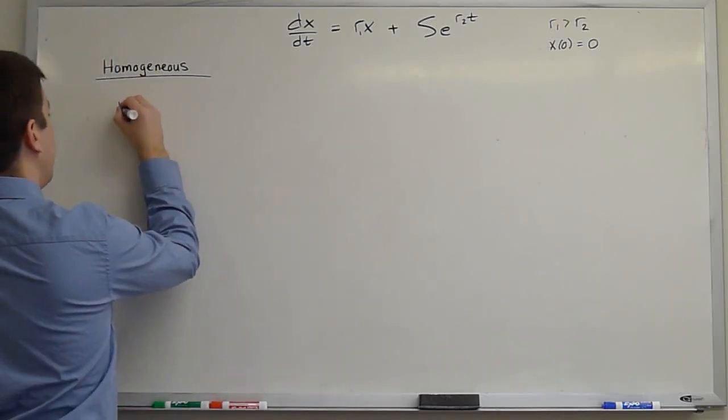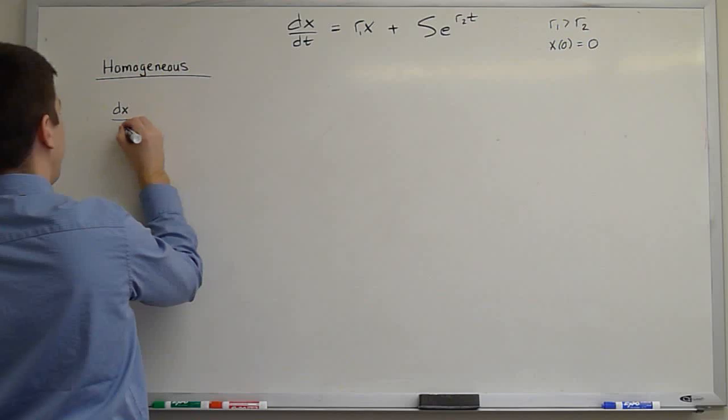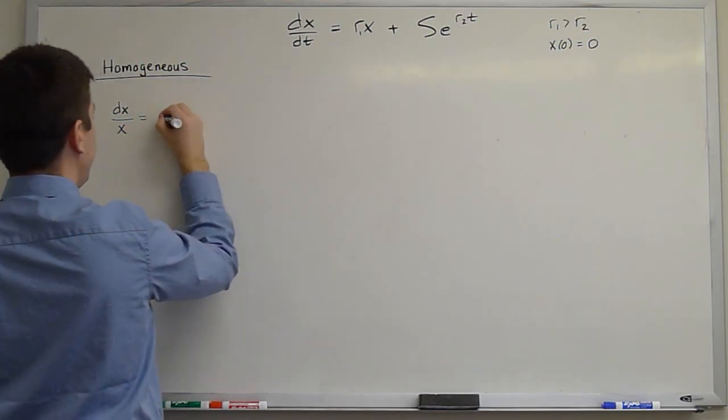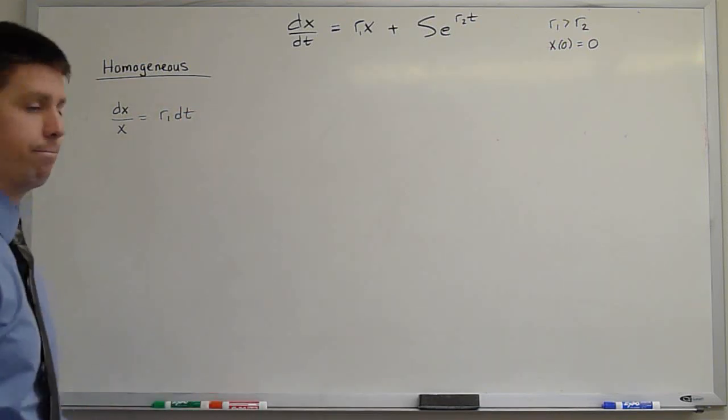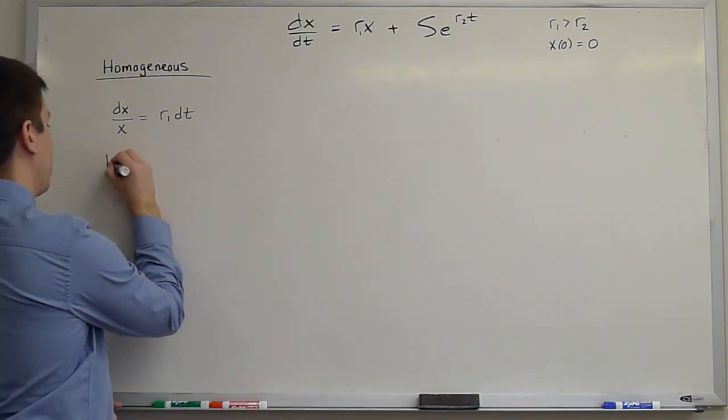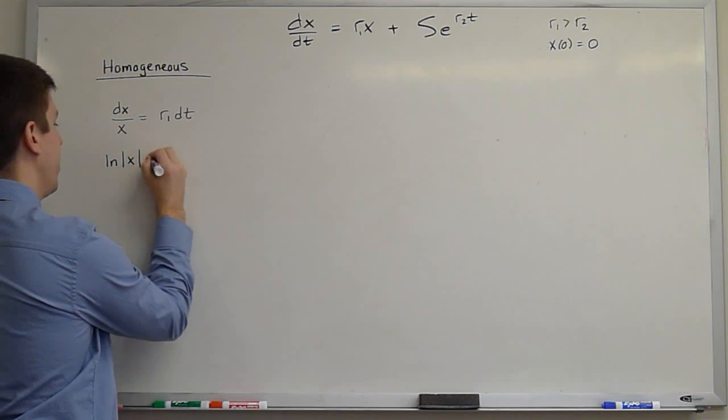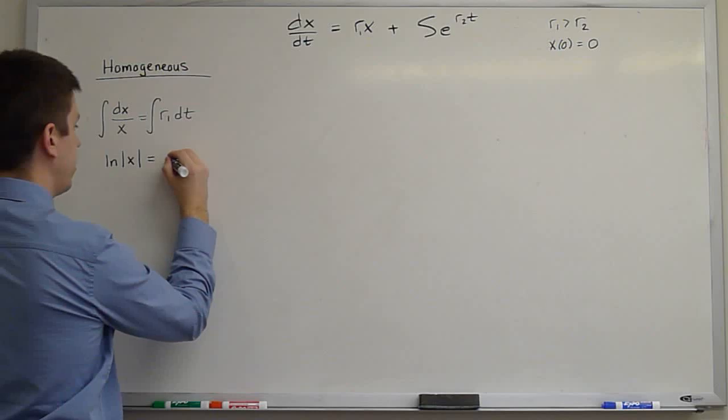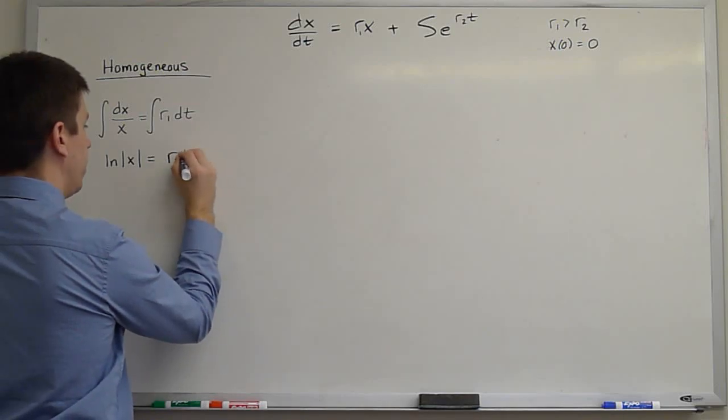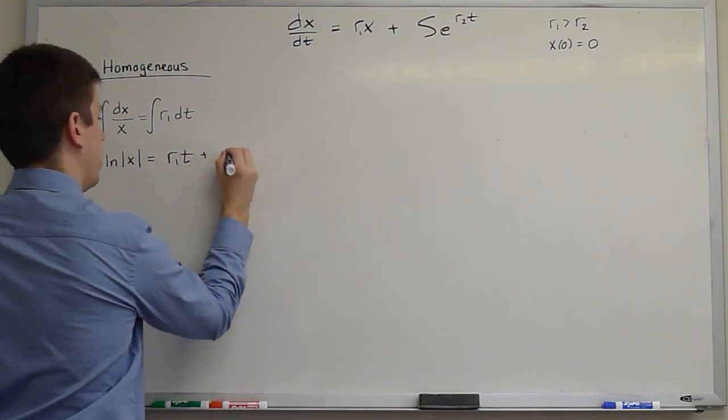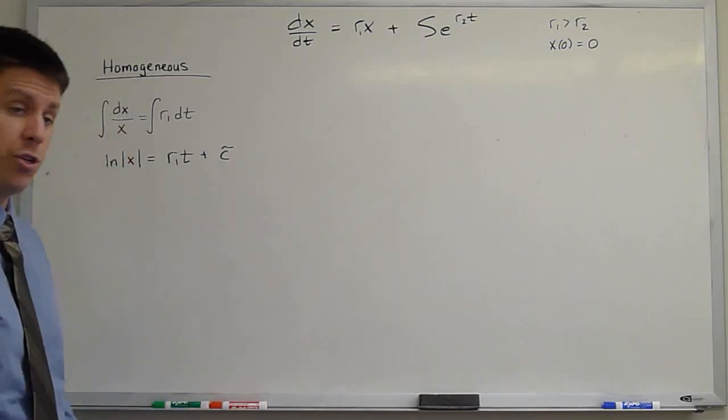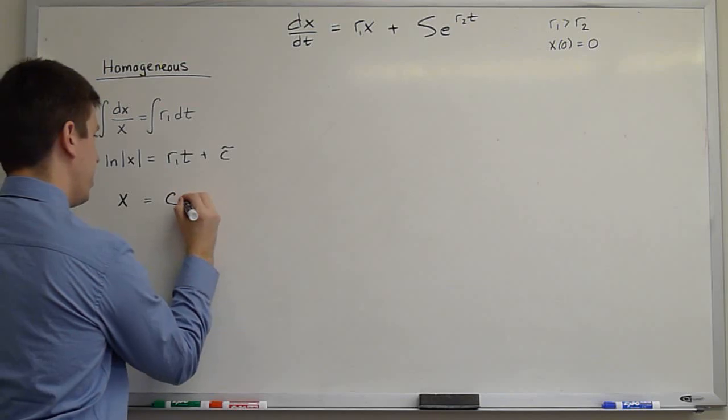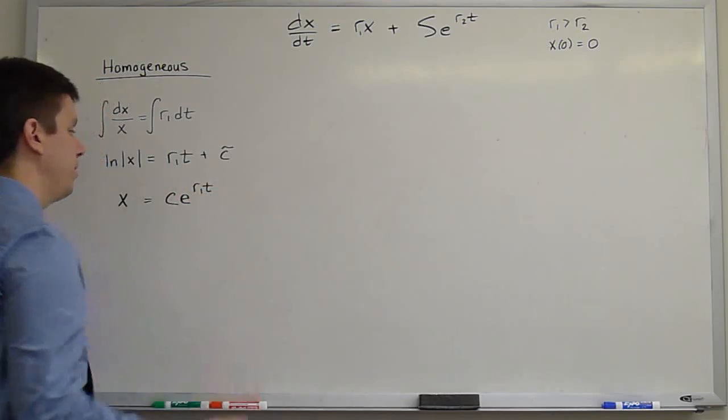We would have dx, if we divide both sides by x, we'd have dx/x equals, multiplying both sides by dt, r1*dt. So ln of the absolute value of x, when we integrate both sides, gives us ln|x| = r1*t plus an undetermined constant. And then we take exponentials of both sides, we'll get x = c*e^(r1*t).